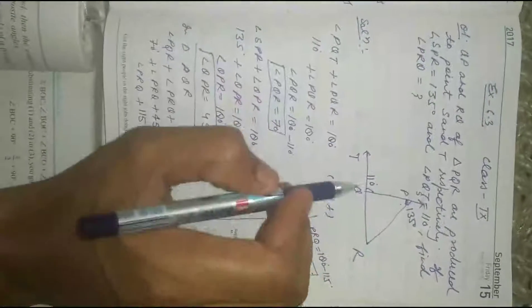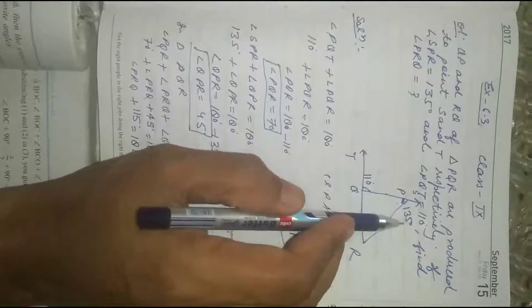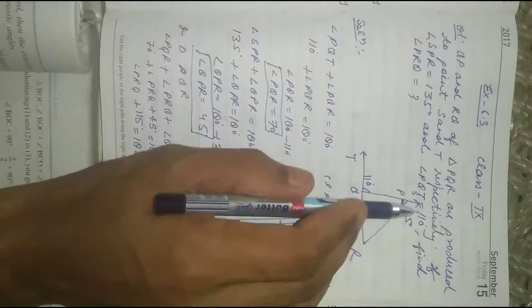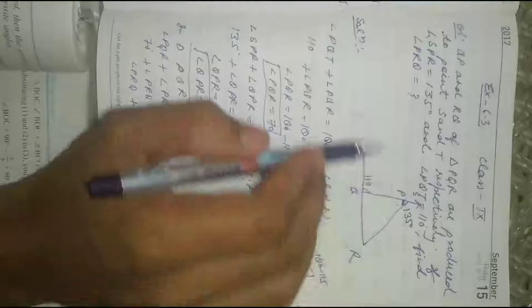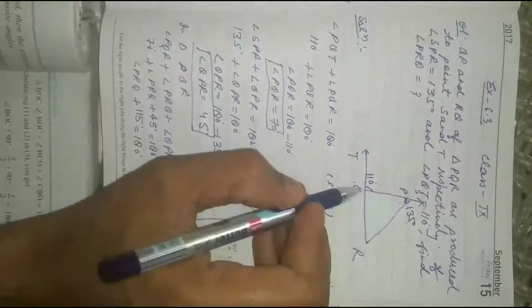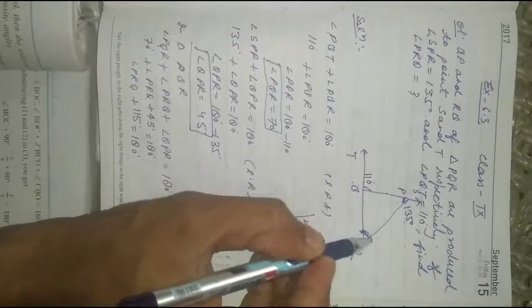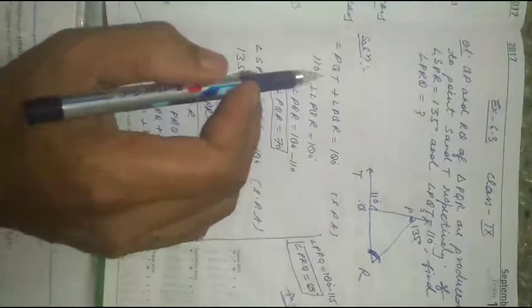If angle SPR is 135 degrees and angle PQT is 110 degrees, find angle PRQ. This angle we have to find out. Now let's solve.